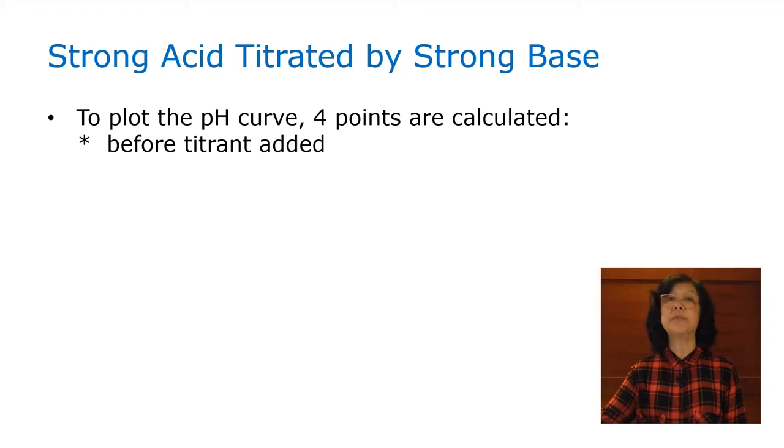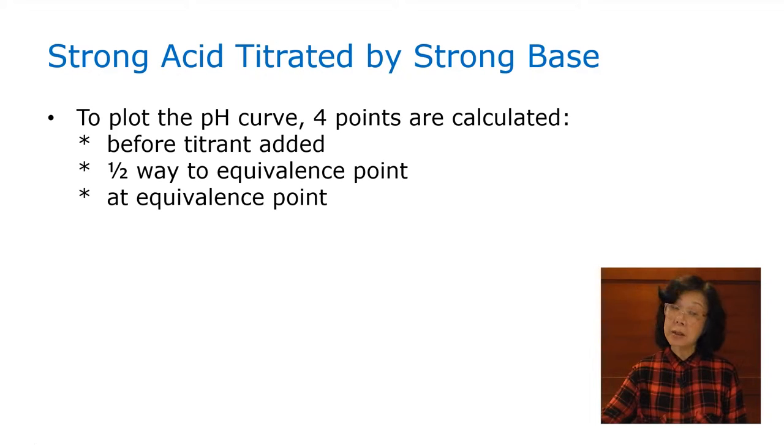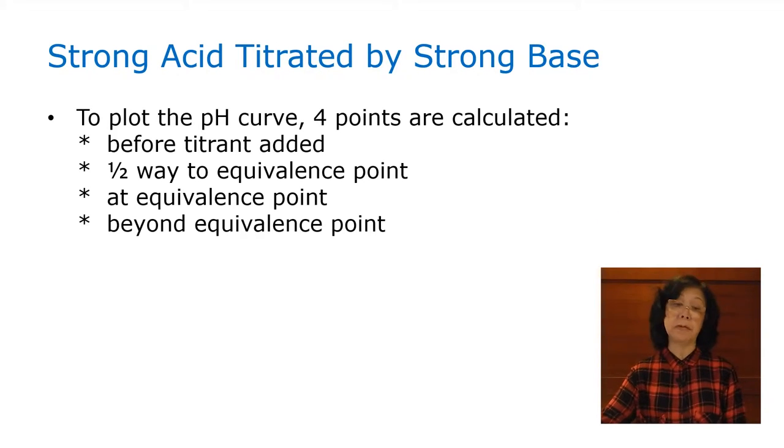The first point is before we add the titrant, what is present in the beaker and the pH reading. Then halfway to the equivalence point, and then exactly at the equivalence point, and finally beyond the equivalence point.